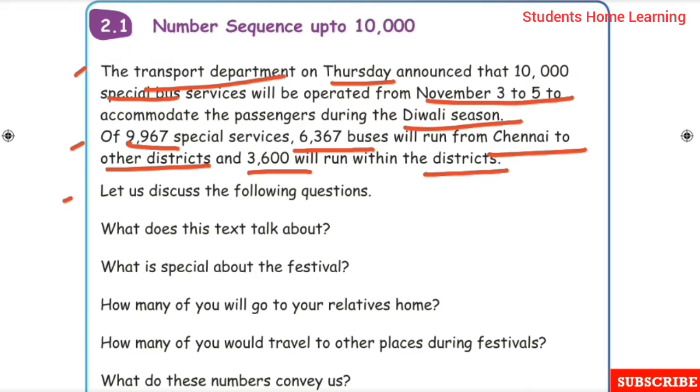Let us discuss the following questions. What does this text talk about? It talks about special buses arranged for Diwali Season. What is special about the festival? During Diwali Festival, many people go to their relatives' homes. How many of you will travel to other places during festivals? What do these numbers convey us? They tell us how many special buses and where they will go.